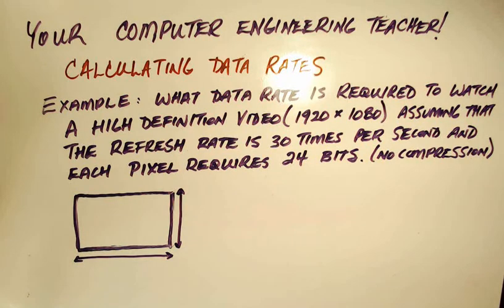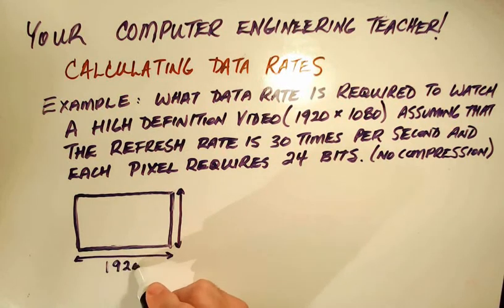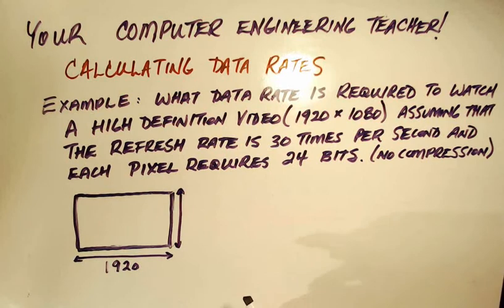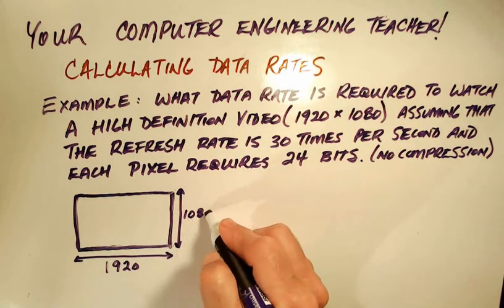We're going to assume here that we have a high definition video that is the following: there are 1920 small pixels that go across the screen. Going up and down the screen is 1080 pixels.